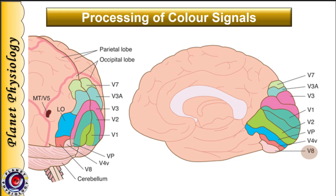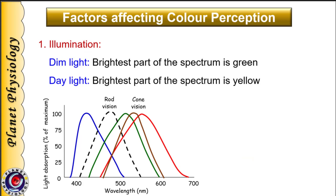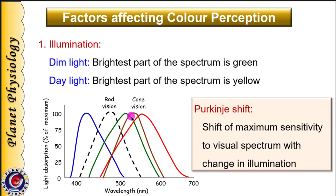Now let us study the factors affecting color perception. The first is illumination — whether you are seeing color in bright or dim light. In dim light, the brightest part of the visual spectrum is green, because rods are active and their sensitivity spectrum is closer to the green spectrum. During daylight or bright light, the brightest part of the spectrum is yellow, closer to the red spectrum. Hence the same color is perceived differently under bright and dim light. This shift in maximum sensitivity with changes in illumination is known as the Purkinje shift.